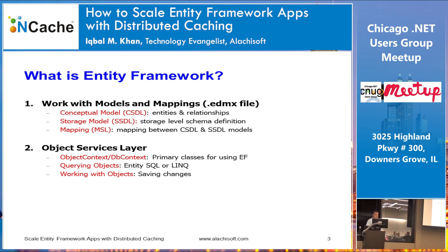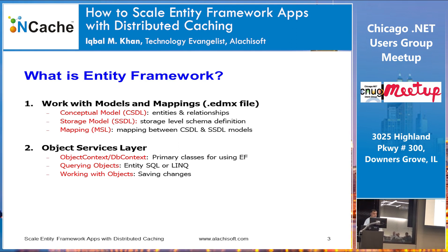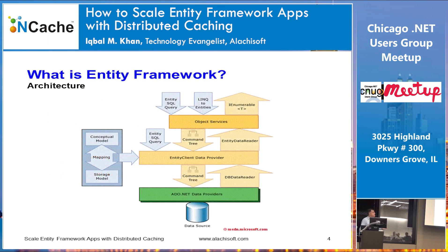A brief overview: you have a conceptual model, a storage model, and a mapping. You have an object services layer which allows you to query objects or make changes and save them. My purpose is not to teach EF here — my purpose is to talk about scalability. Here's the architectural diagram of Entity Framework with all three models and the overall Entity Framework object context broken down internally.